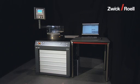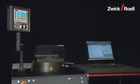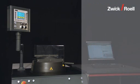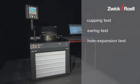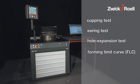The BUP sheet metal testing machine tests the ductility of sheet metal. Typical test methods include the cupping test, the earring test, the hole expansion test, determination of the forming limit curve, and the bulge test.